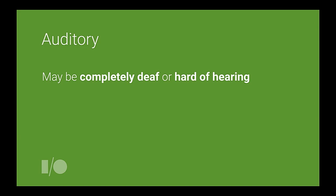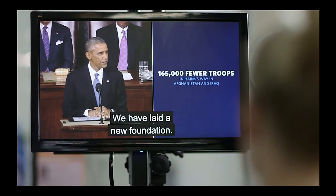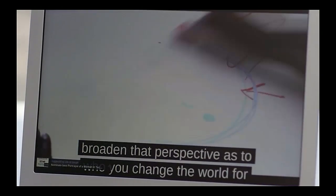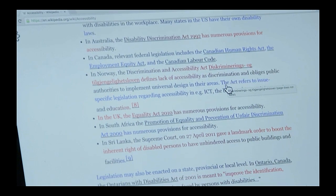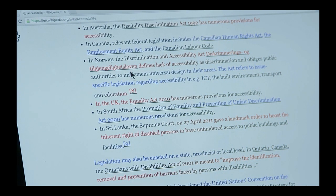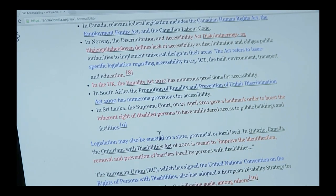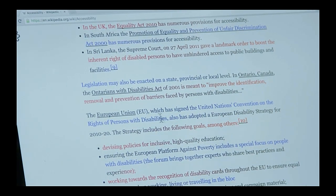For auditory impairment, this group ranges from those who are completely deaf to those who are hard of hearing. I'm personally in the hard of hearing camp — I'm about 90% deaf on my left side. For this group, it's important to make sure we're not relying solely on sound to convey information. So we've got captioning, transcripts, and if we're playing sound in the background, providing some sort of visual indicator. For cognitive impairment, this is a really broad range encompassing everything from ADHD, dyslexia, and autism — with accommodations that are extremely diverse, including zoom functionality and minimizing distraction.